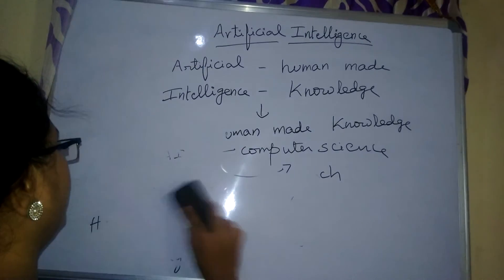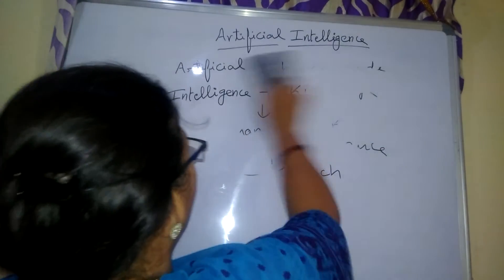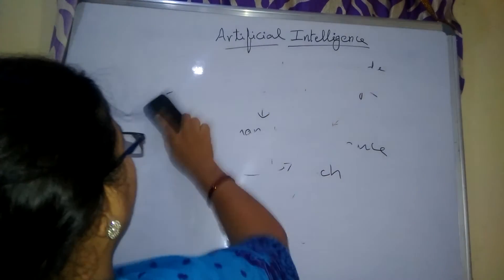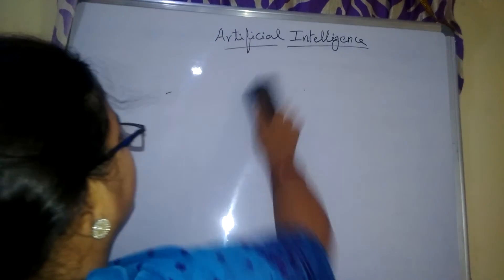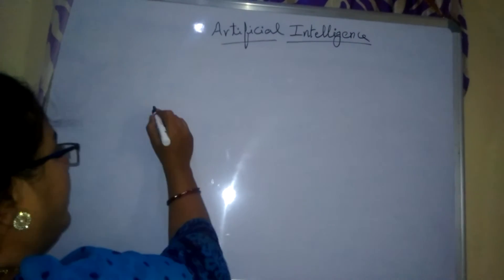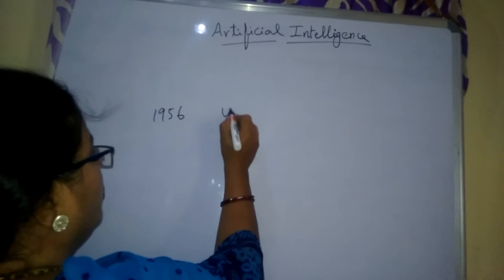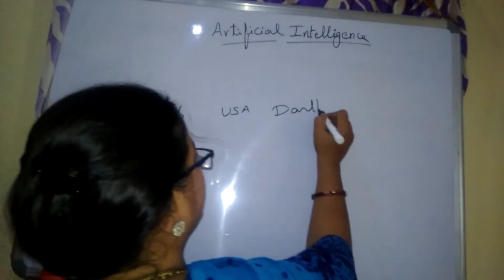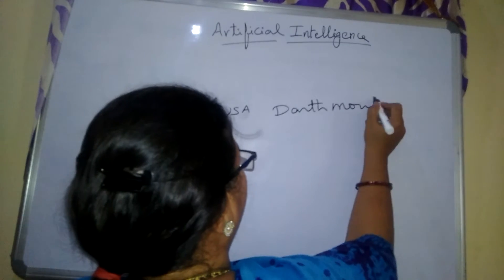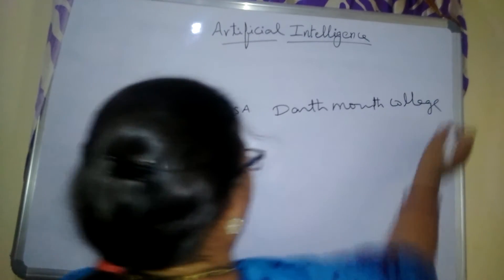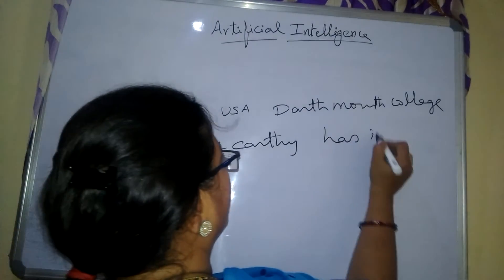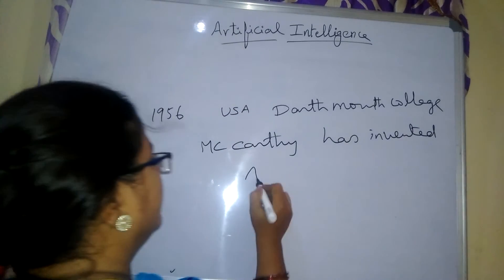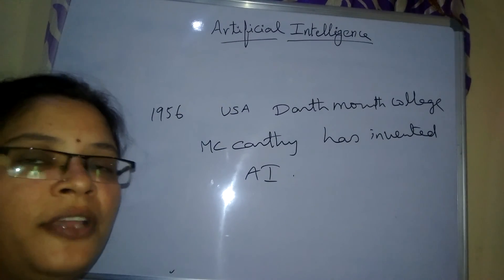Now what are the various things regarding artificial intelligence? We are going to see, and what is the history of artificial intelligence — that also we are going to see. In 1956, USA, Dartmouth College, a famous scientist called M.C. Karthi invented this artificial intelligence. This is the history of artificial intelligence.